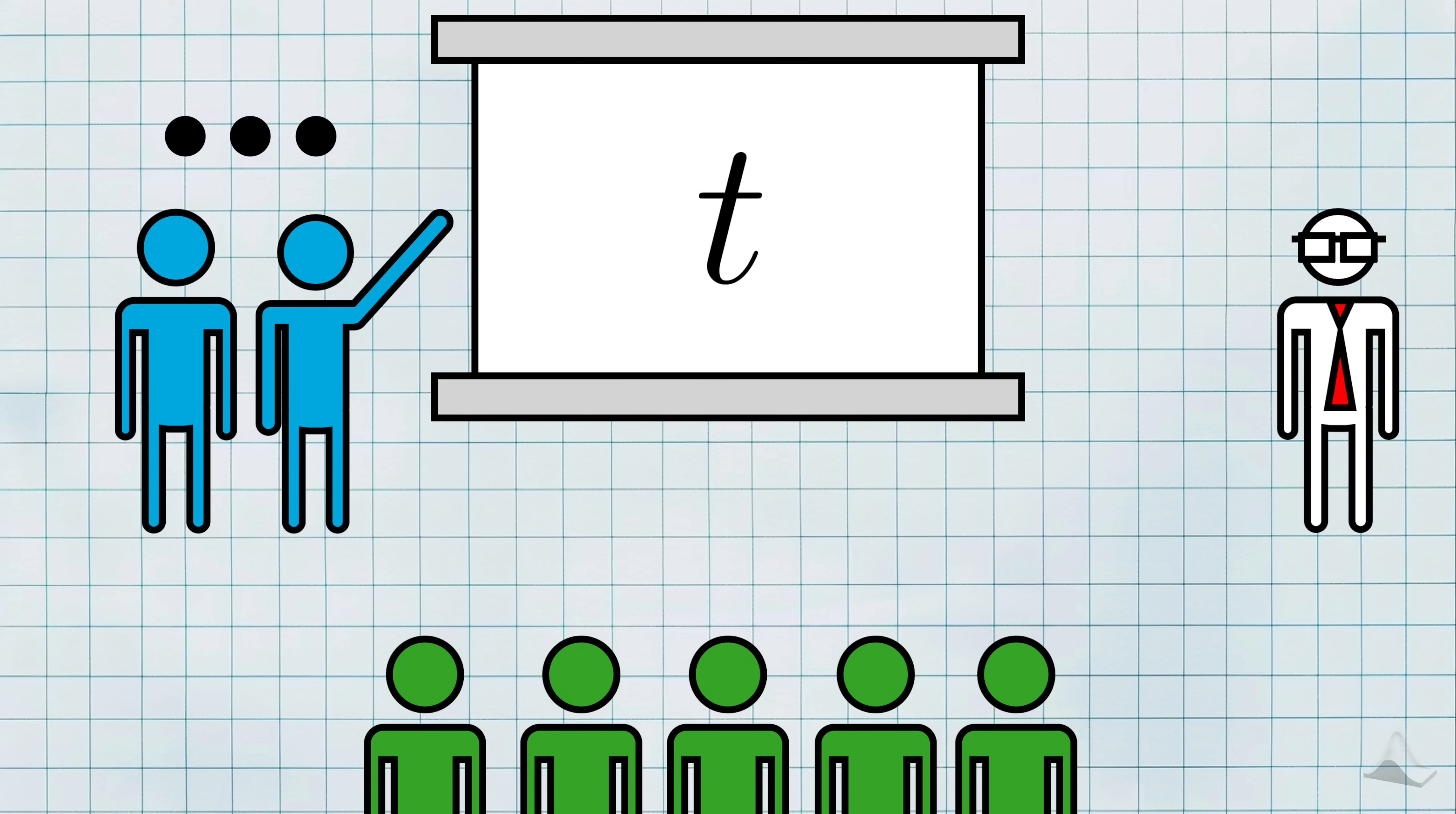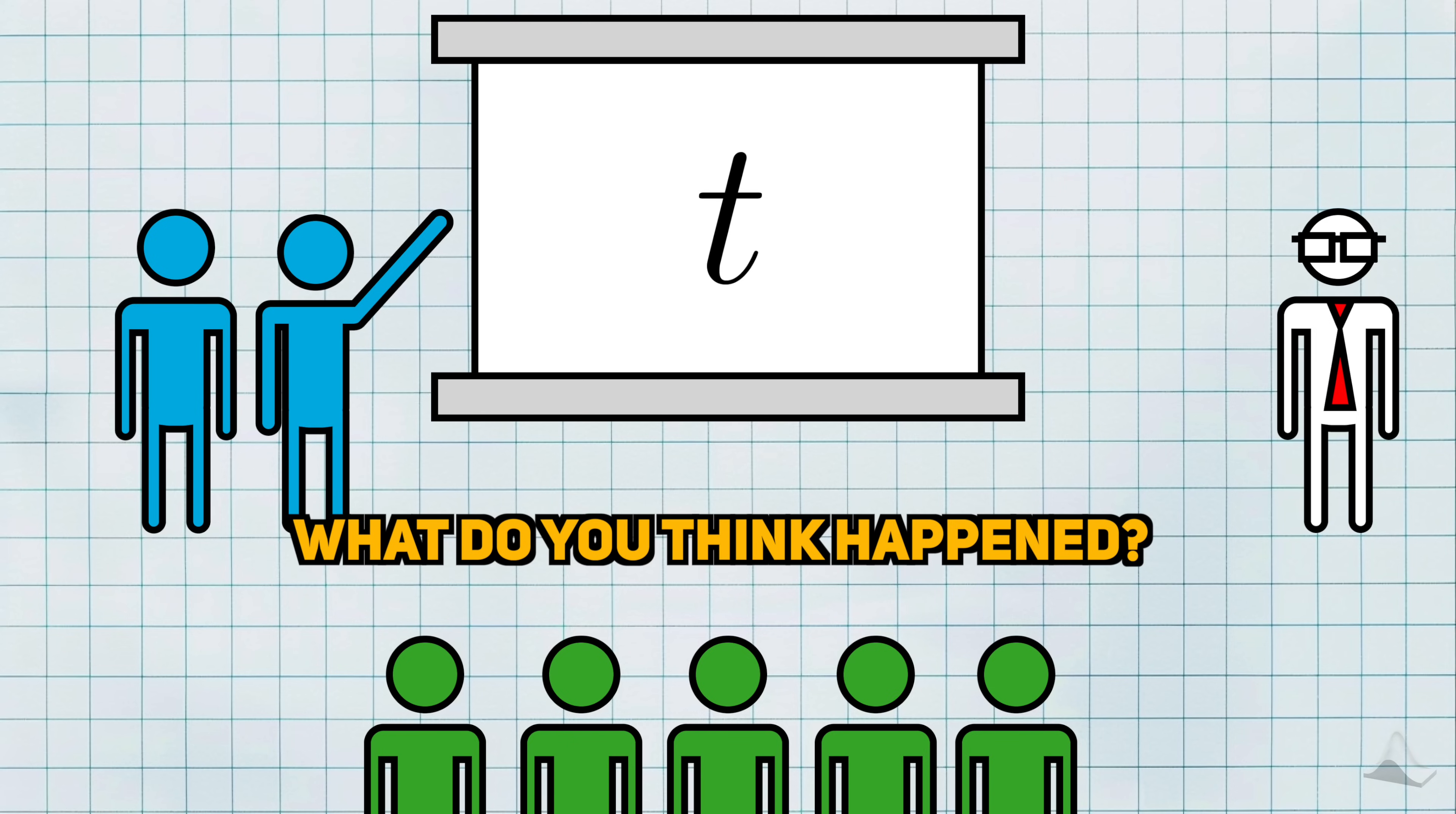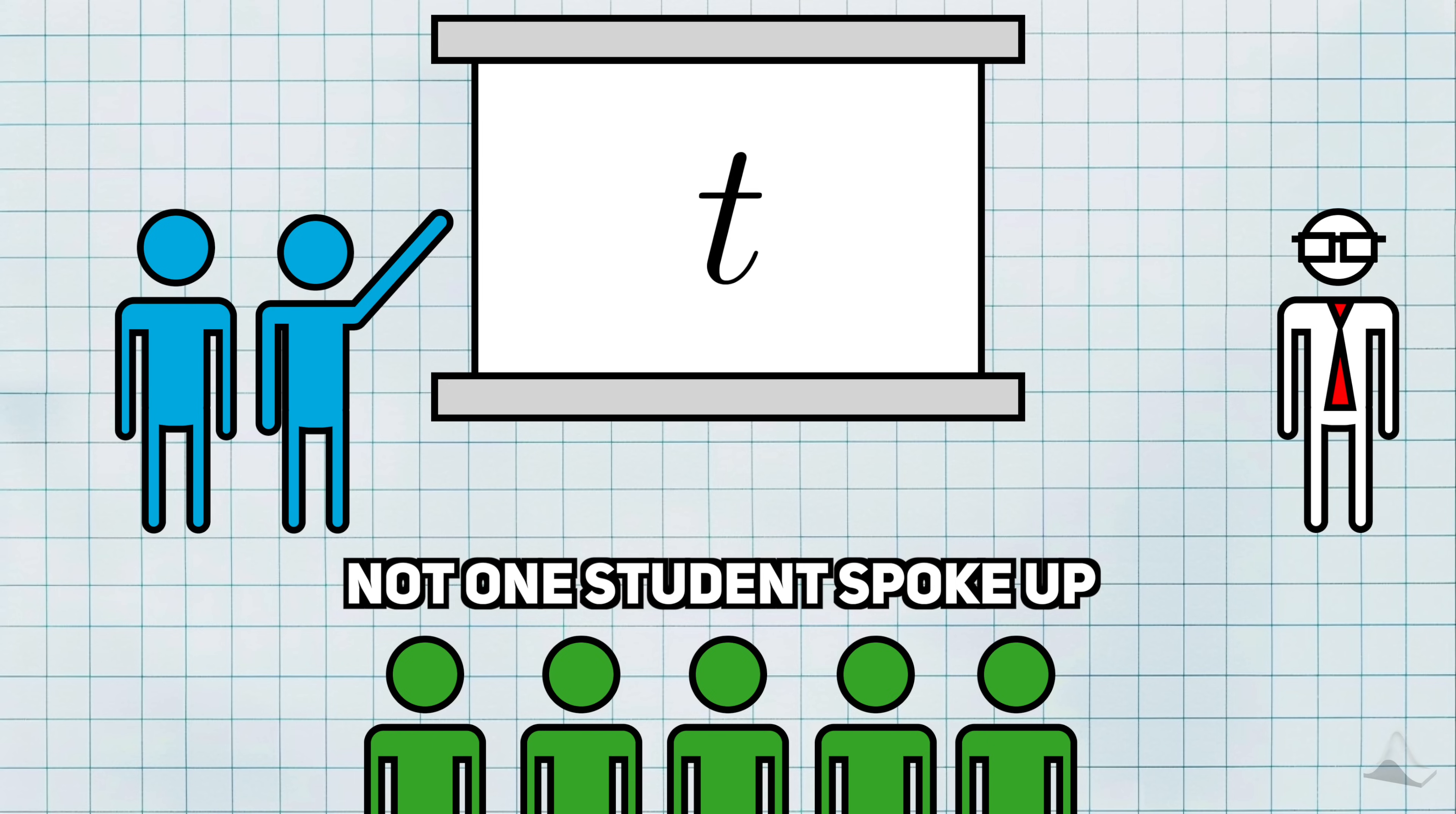No answer. Disappointed, the professor turned to the rest of us. Well, do any of you have an answer? There were 40 students in that room, and all of us had a year and a half of graduate-level statistical training. What do you think happened? Not one of us dared to speak up to even attempt it. Not even the try-hards.